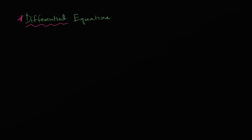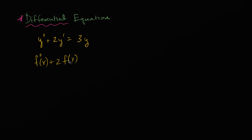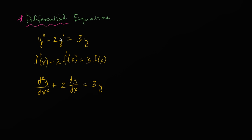Here's an example of a differential equation. If I were to write that the second derivative of y plus two times the first derivative of y is equal to three times y, this right over here is a differential equation. We could also write it in function notation: the second derivative of our function with respect to x plus two times the first derivative of our function is equal to three times our function. Or in Leibniz notation: d²y/dx² plus two times dy/dx is equal to three times y. All three of these equations are really representing the same thing.